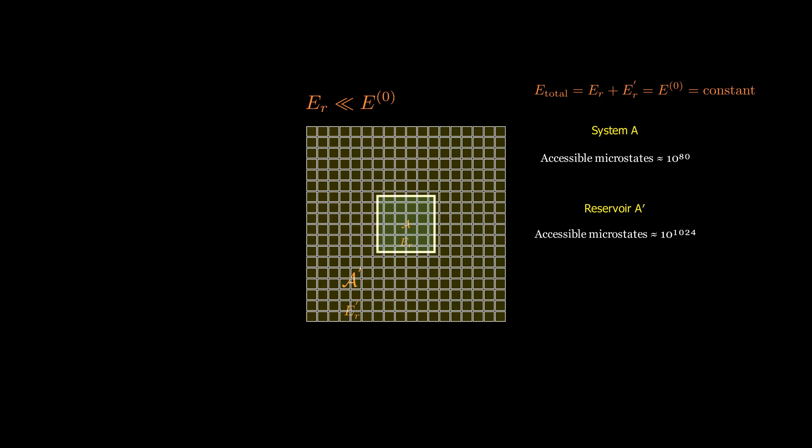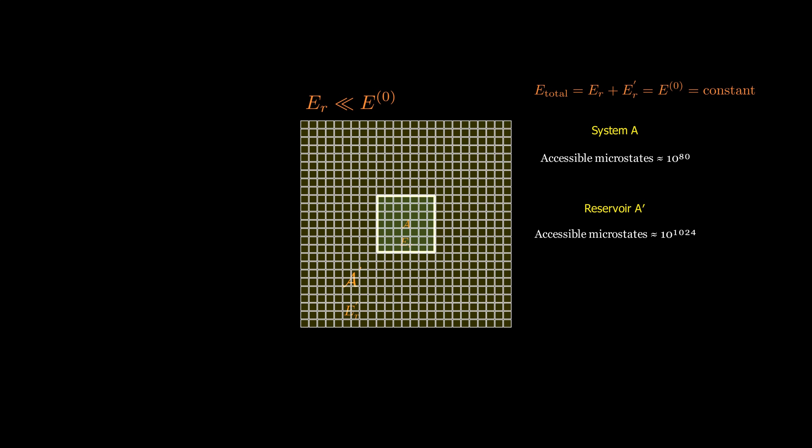We start with a small system, call it A, in thermal contact with a much larger reservoir, A'. Together, they form an isolated system with fixed total energy. Let's denote the energy of system A by ER and the energy of the reservoir by ER'. Since the total energy is conserved, we have the equation shown. We also assume that system A is much smaller than the reservoir. That means ER is much smaller than the total energy E0. So we can expand the number of microstates available to the reservoir around its total energy. From statistical physics,